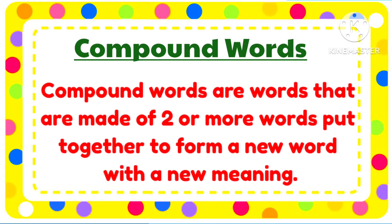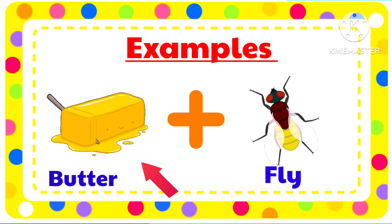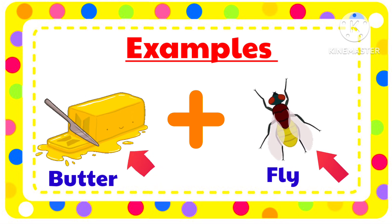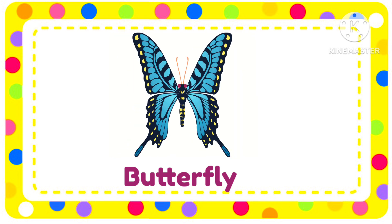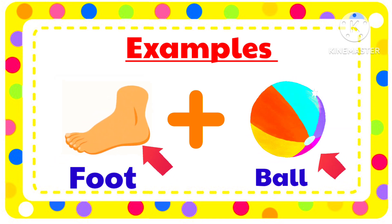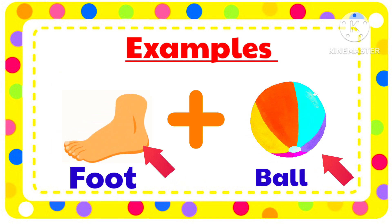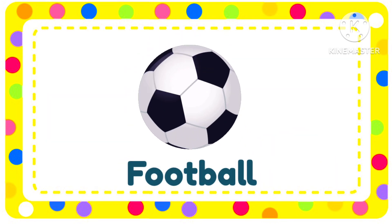Compound words are words that are made up of two or more words put together to form a new word with a new meaning. For example, this is Butter and this is Fly — their combined word is Butterfly. This is Food and this is Ball — their combined word is Football. Now let's see some more examples.